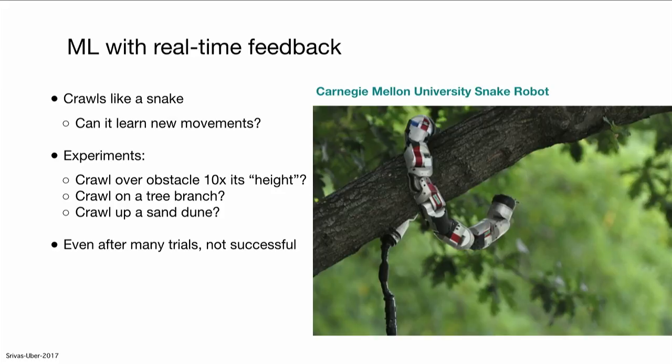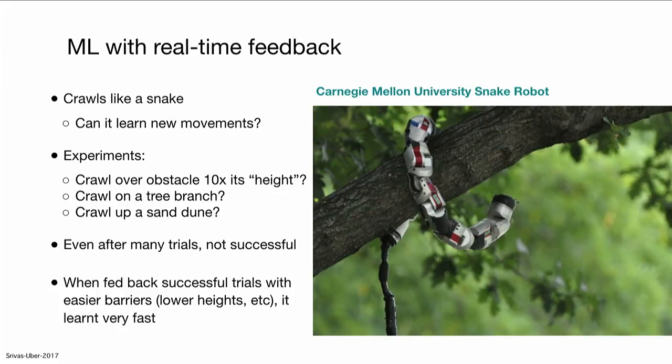And even after many trials, this experiment wasn't successful. But when they started feeding back successful trial data from very low barriers — much easier barriers — the robot learned very quickly on its own.